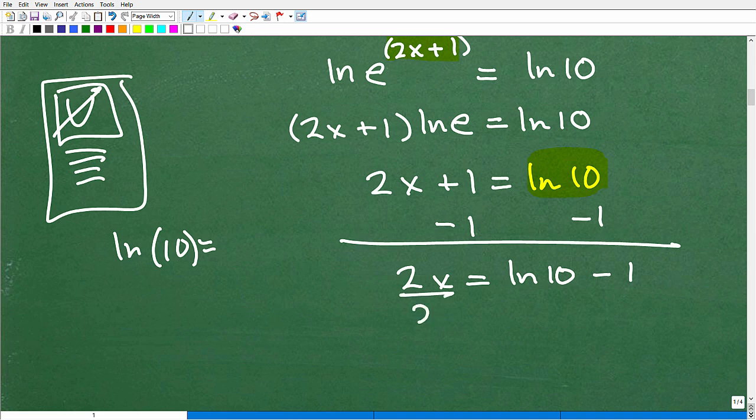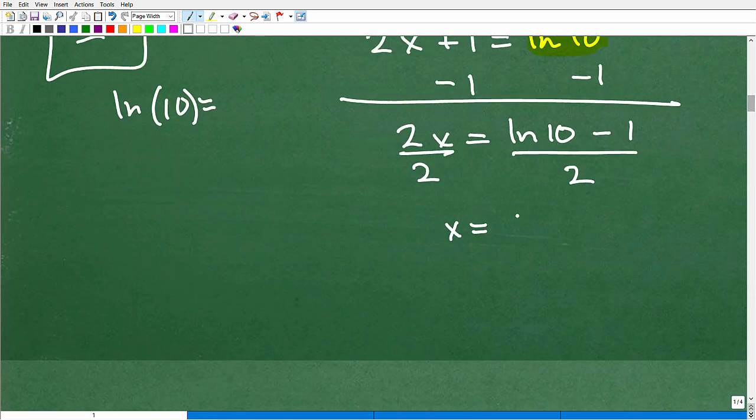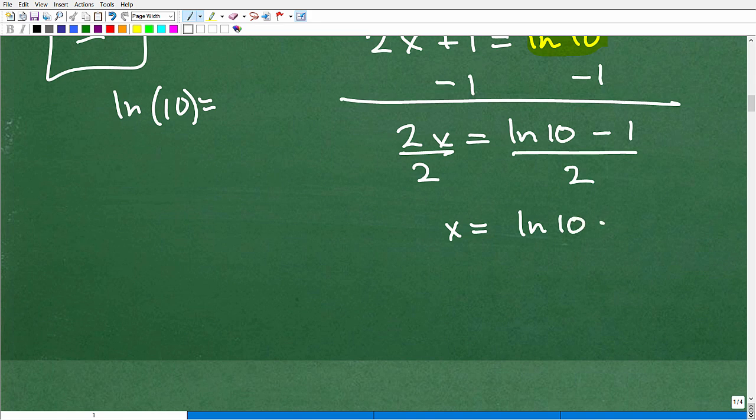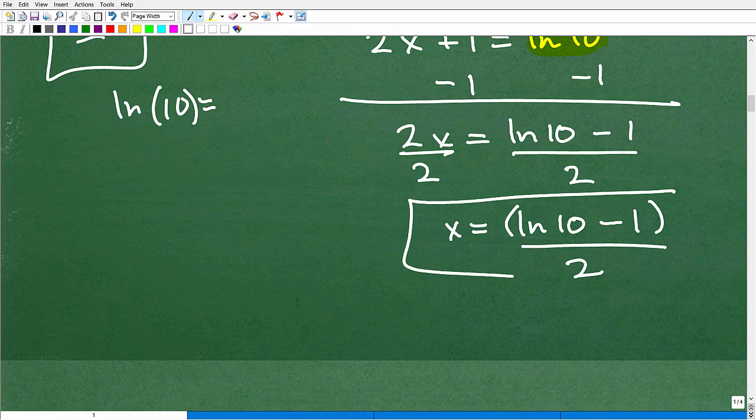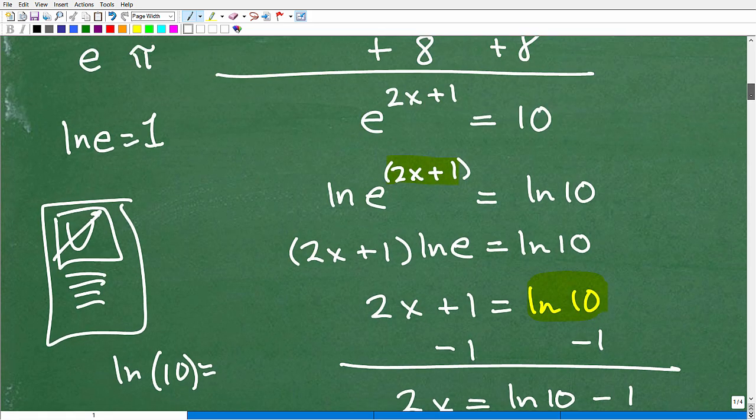So, x, to get x, I just need to divide both sides of the equation by 2. So, x would be equal to, let's go and write this out, ln 10 minus 1, put that in parentheses, over 2, and there would be my solution to this exponential equation.